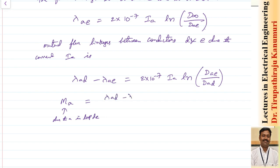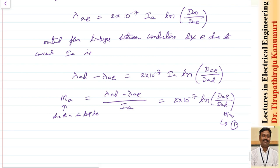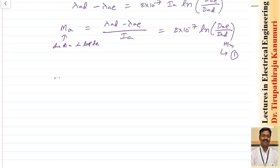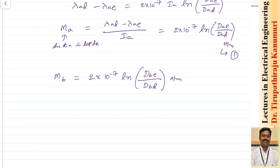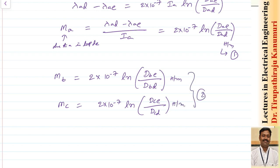M_A = 2×10⁻⁷ × ln(D_AE / D_AD) Henry's per meter — equation 1. Similarly, M_B = 2×10⁻⁷ × ln(D_BE / D_BD) Henry's per meter. Likewise, M_C = 2×10⁻⁷ × ln(D_CE / D_CD) Henry's per meter — equation 2.